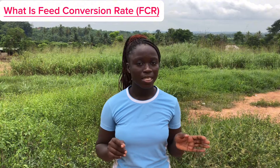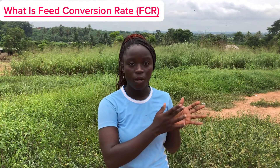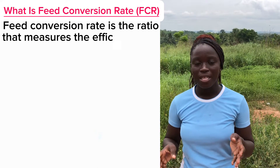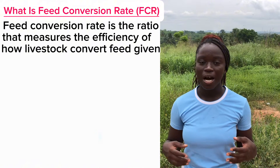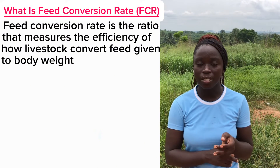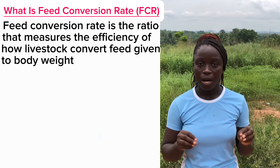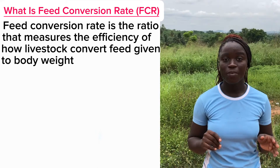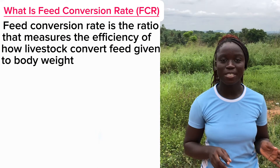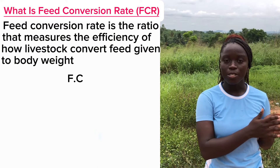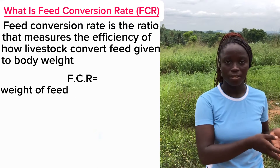So what at all is feed conversion rate? Let's take the name very slowly. Feed conversion rate is simply the ratio that measures the efficiency of how livestock — be it cows, pigs, goats, chicken, whatever livestock — is able to convert feed given into body weight. To make it simpler, in mathematical terms: feed conversion rate (FCR) equals the weight of feed given divided by the weight gained by the animal.